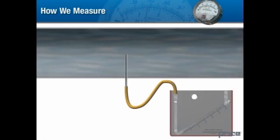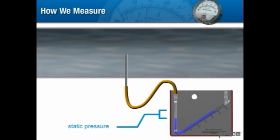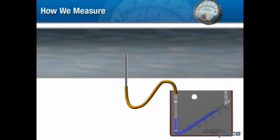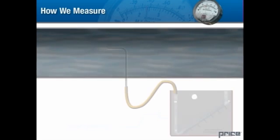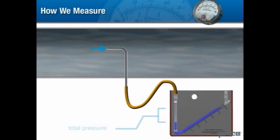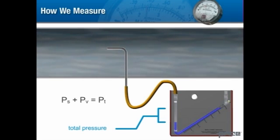If we insert a tube into a duct at 90 degrees to the air flow, we can measure the static pressure, because the velocity pressure has no effect on the measurement. If we insert a tube into the duct facing the air flow, we can measure the total pressure, which is the effect of the static pressure plus the velocity pressure. To arrive at a measurement of the velocity pressure, we must subtract the static pressure from the total pressure measurement.